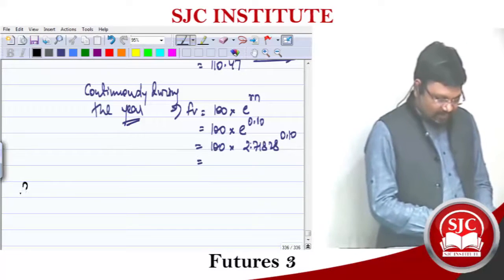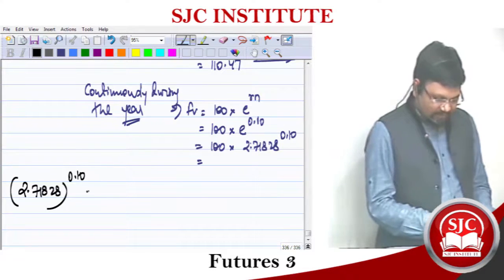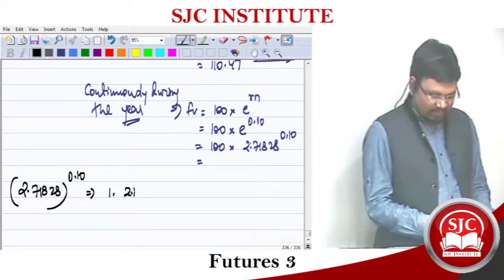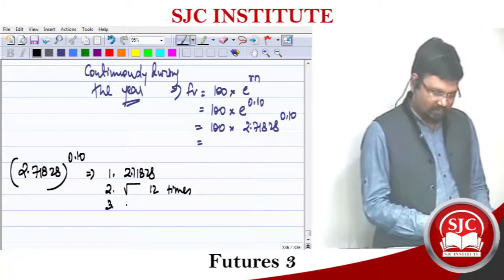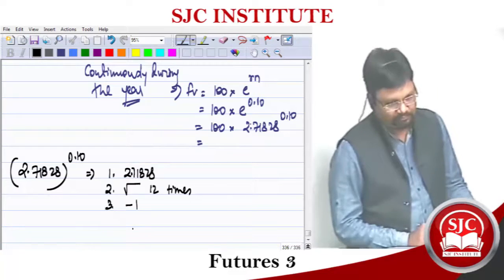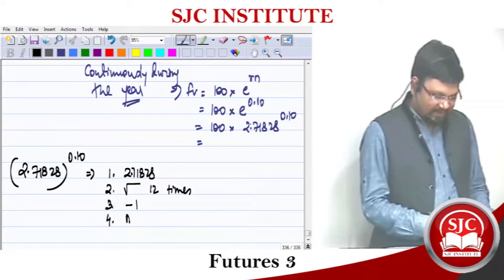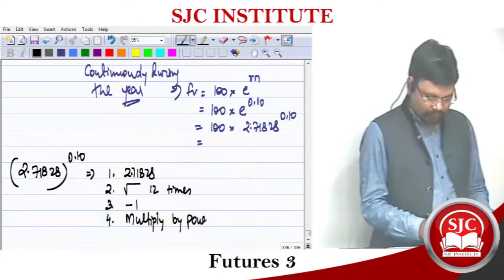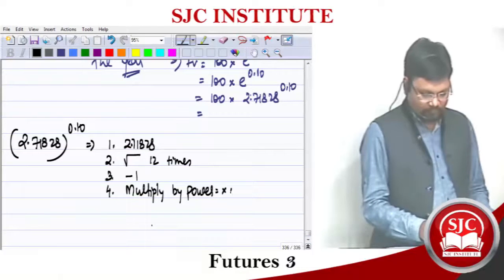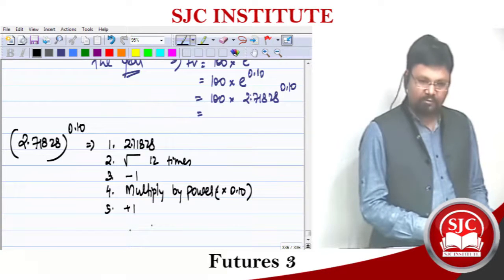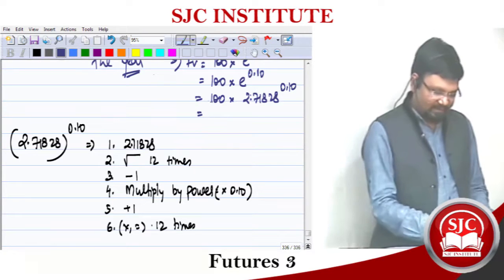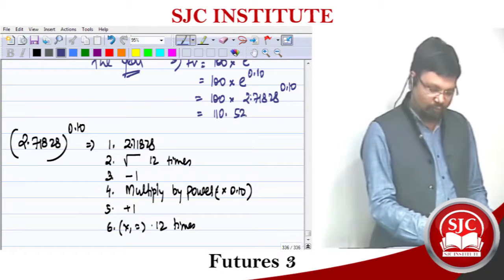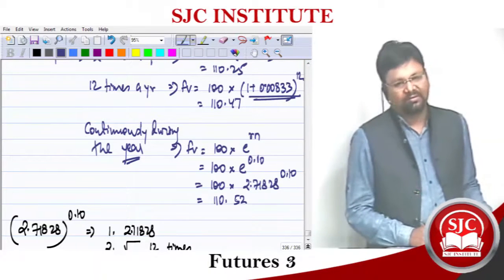To get this in the calculator, first take 2.71828 and find its square root 12 times. Subtract minus 1 from it. Multiply by the power, which is 0.1. Add plus 1, then press multiply-equals 12 times. The answer comes out as 110.5252.